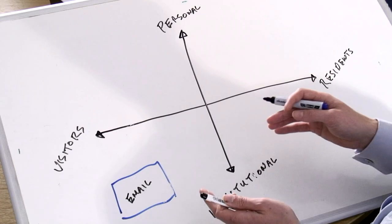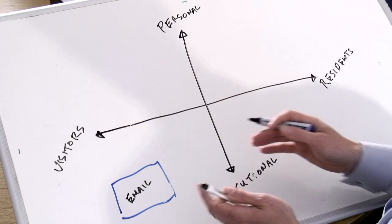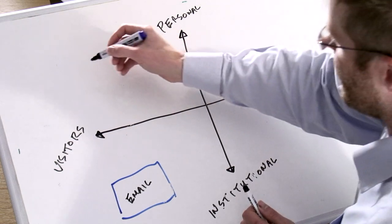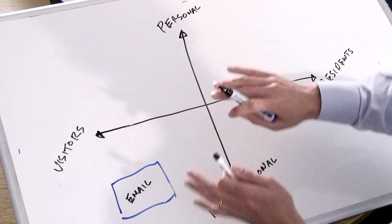And it's very institutional. This is my institutional email I'm referring to. Now when we've done the mapping process before, some people have actually got two blocks for email. They've got their institutional email and they've got their personal email that they'd probably put up in this quadrant somewhere over here. And it's interesting to think about the fact that what you've got there is exactly the same technology but split by role. So they've compartmentalized their institutional email and their personal email, which many of us do.